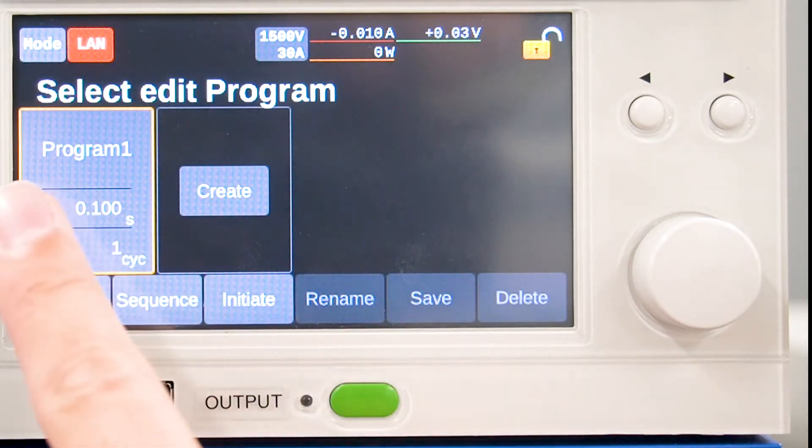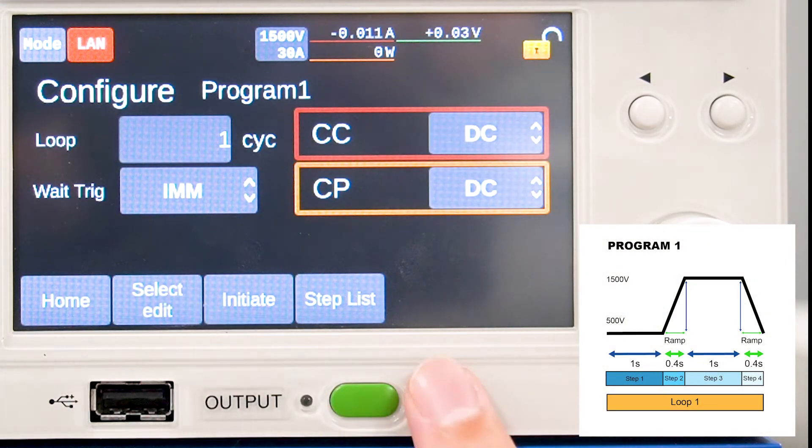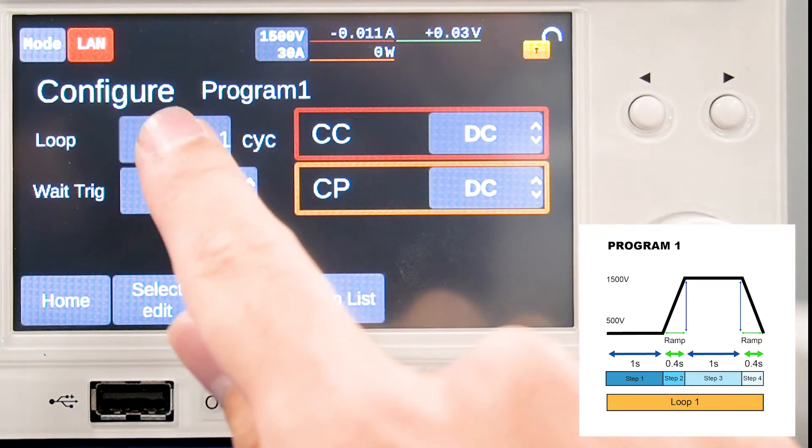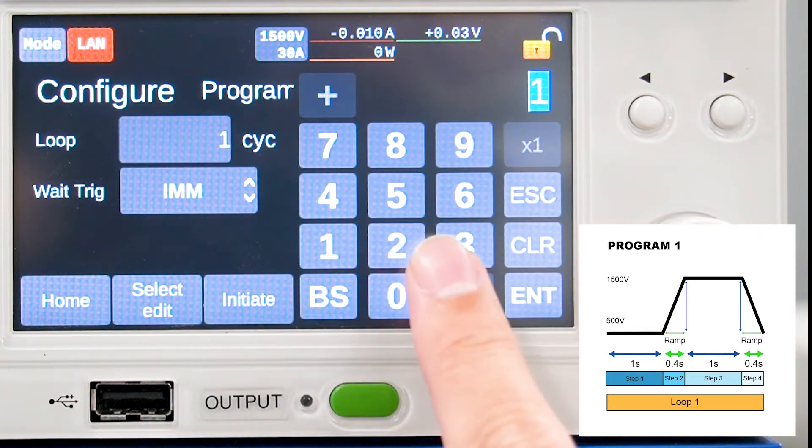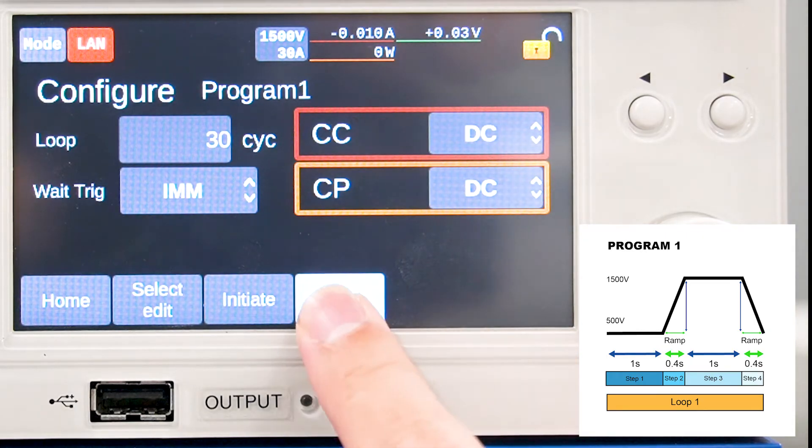The program list appeared on the screen. Press program 1 to move to the program settings. Change the number of loops to 30. Press step list to edit step 1.